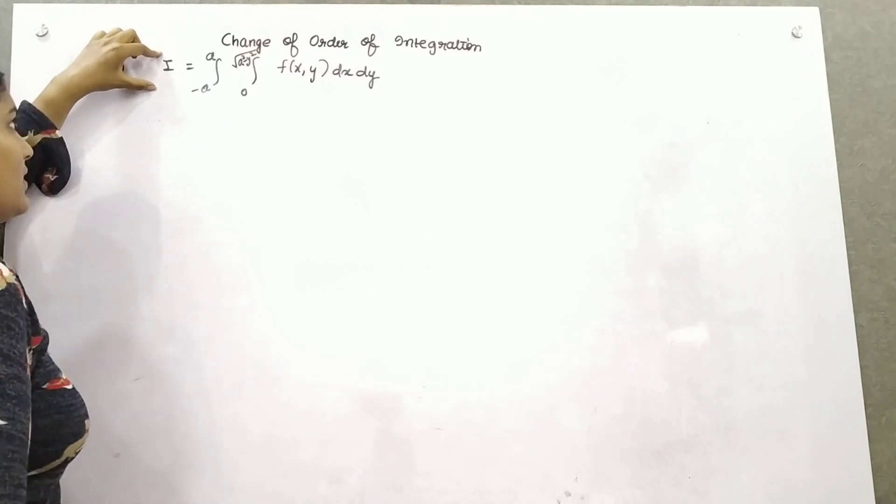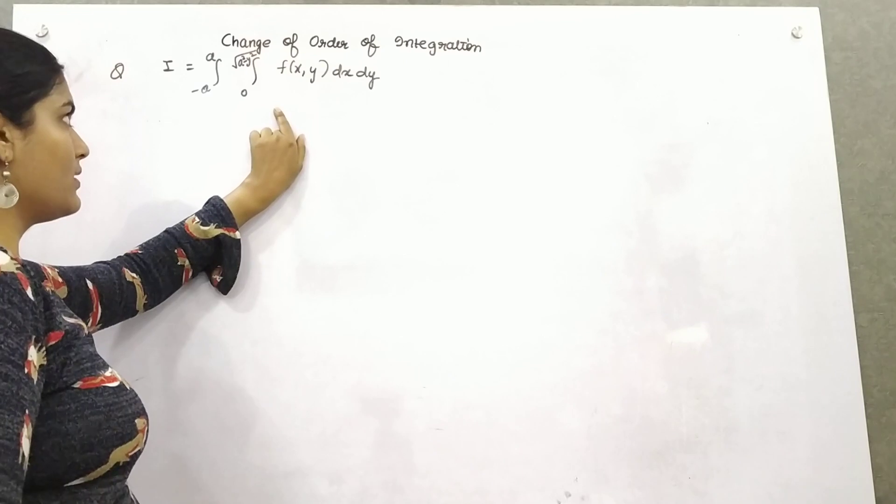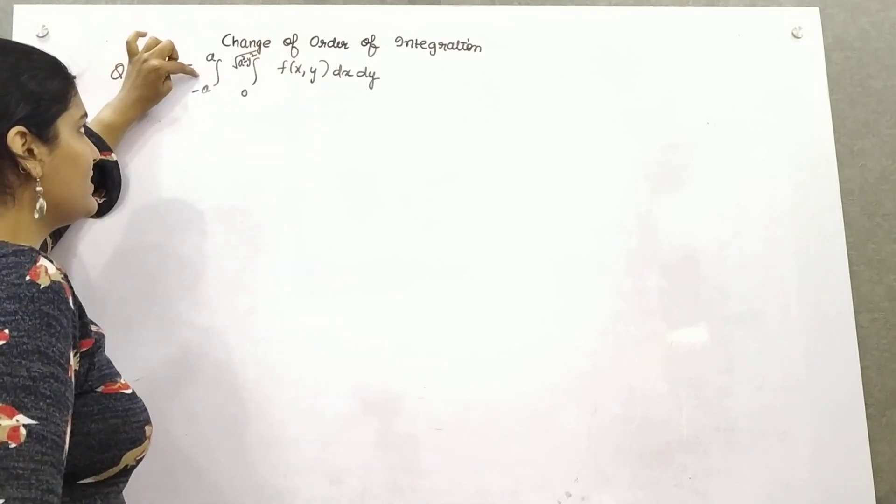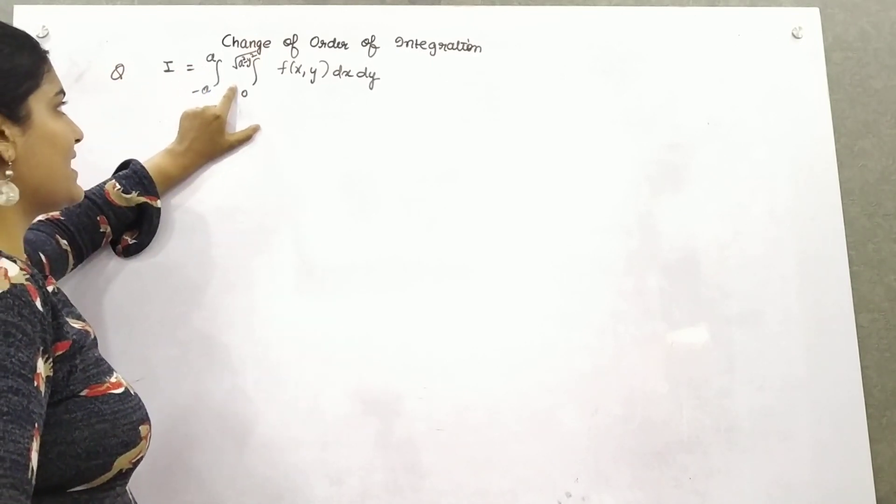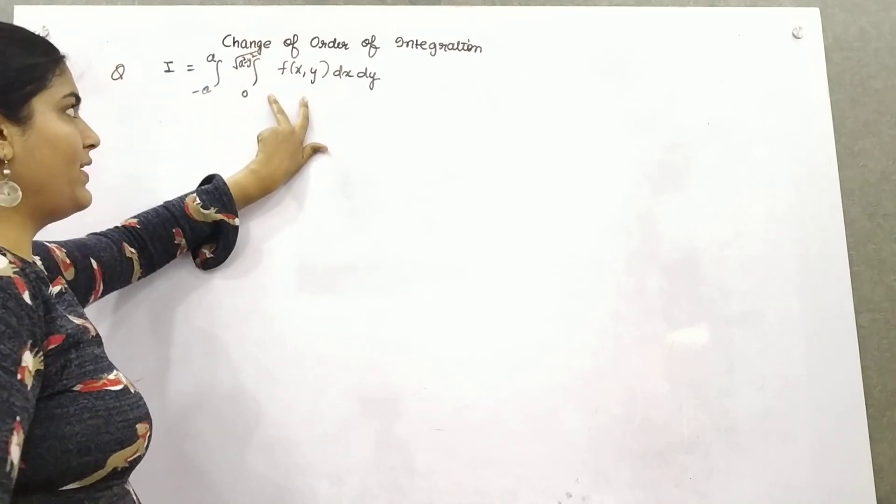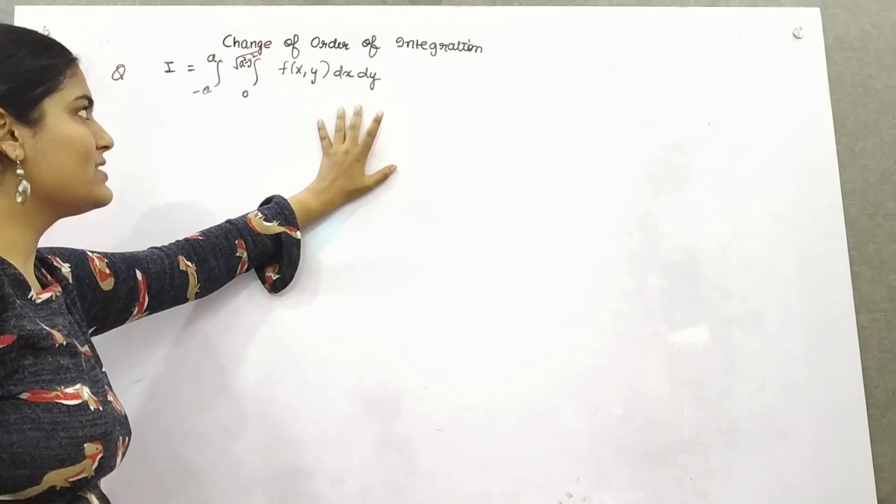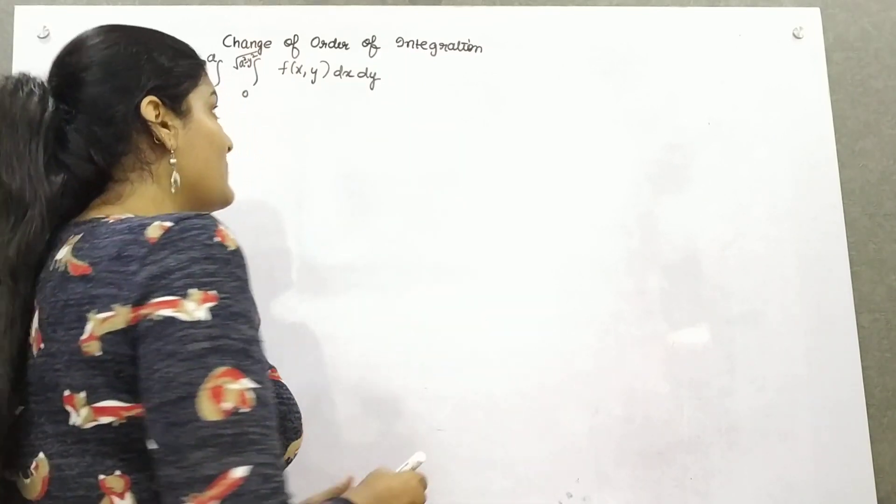You are given a question where you have to change the order for this integration. What is given to you is a double integral where the first limit varies from minus a to a, second limit from 0 to root a square minus y square, and the function is f(x,y), and you are integrating with respect to dx.